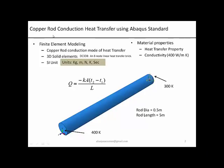For today's session we are going to do a copper rod conduction heat transfer analysis using Abaqus Standard. For this particular problem we are going to use a 3D solid element — specifically the 8-noded linear heat transfer brick element DC3D8. We are going to use SI units: Kelvin, kg, meter, Newton, and second.